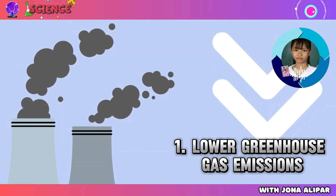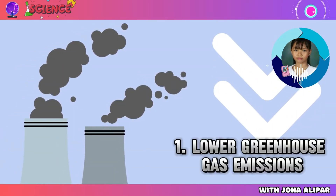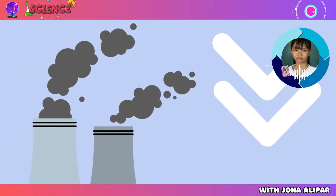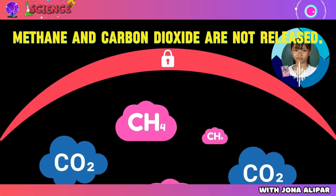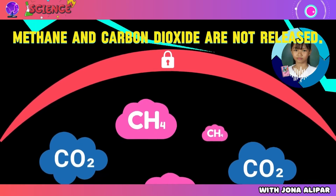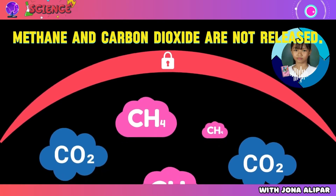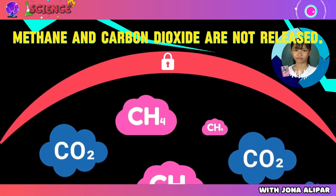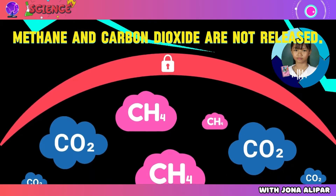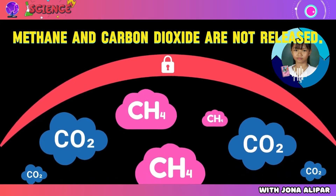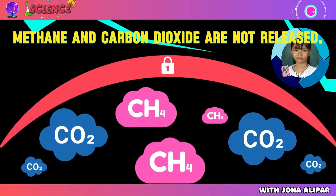Number one: lower greenhouse gas emissions. Methane and carbon dioxide, two dangerous greenhouse gases, are not released during the electricity production process using solar power.